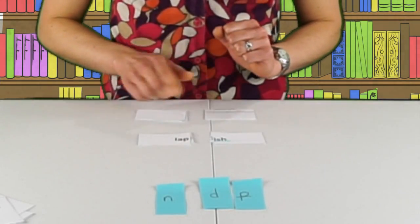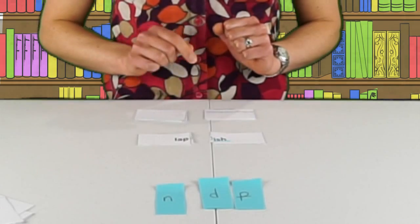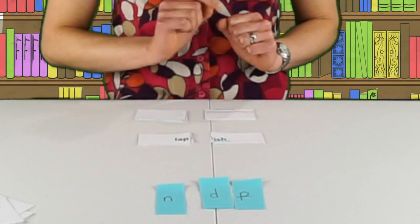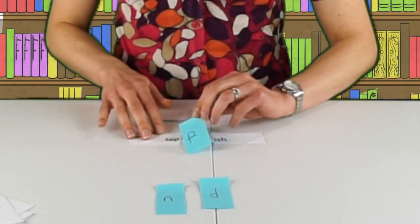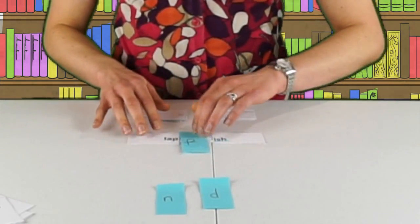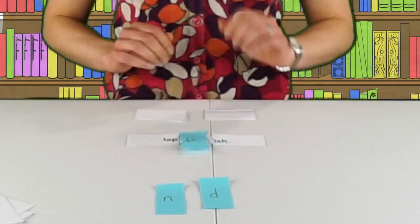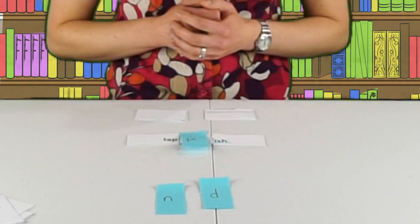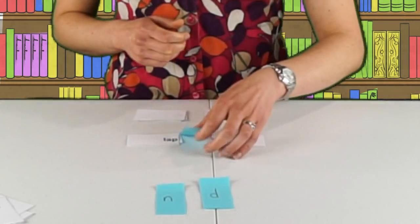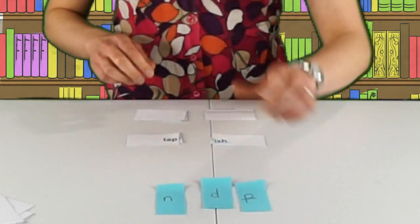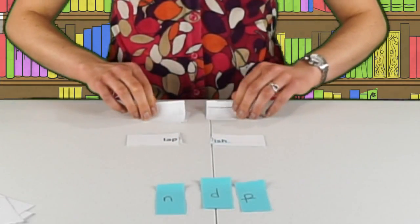Here we have 'lap' plus 'ish.' It's going to follow my one-one-one doubling rule, so I'm going to put that second P in there, and now I can read it: 'lapish.'